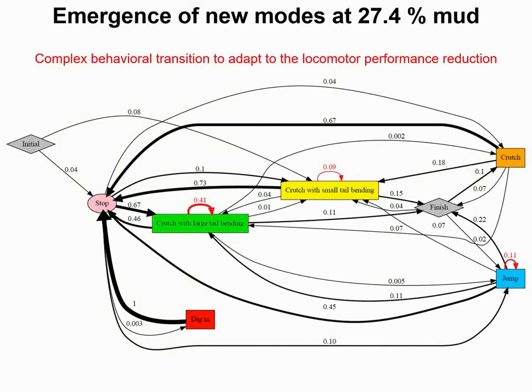We also made a transition diagram for the 27.4% mud, which showed that the animal jumps less often and uses the crutch with large tail bending more often.